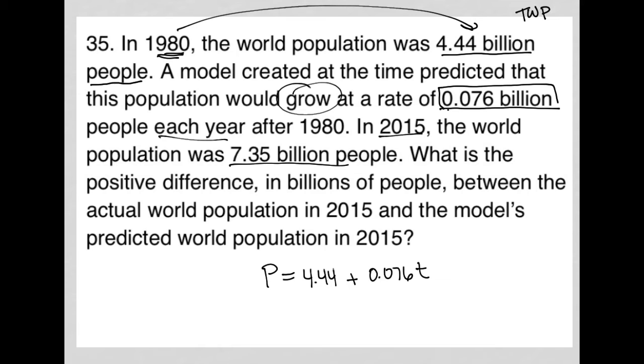This equation represents what we read up to this point. How many years is it between 1980 and 2015? Well, that's 35 years. So that would be T equals 35.